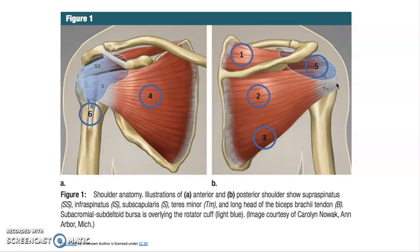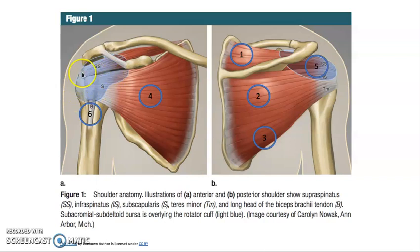However, the rotator cuff may also be acutely injured by trauma, such as falling on your arm and shoulder or from heavy lifting. Cranial to the rotator cuff, there is a bursa, shown with the bluish circle as you see here. This bursa is a synovial membrane sac containing synovial fluid. It covers and protects the muscles and tendons as they are in close contact with the surrounding bones. Overuse of rotator cuff muscles may cause inflammation of this bursa, resulting in shoulder pain.